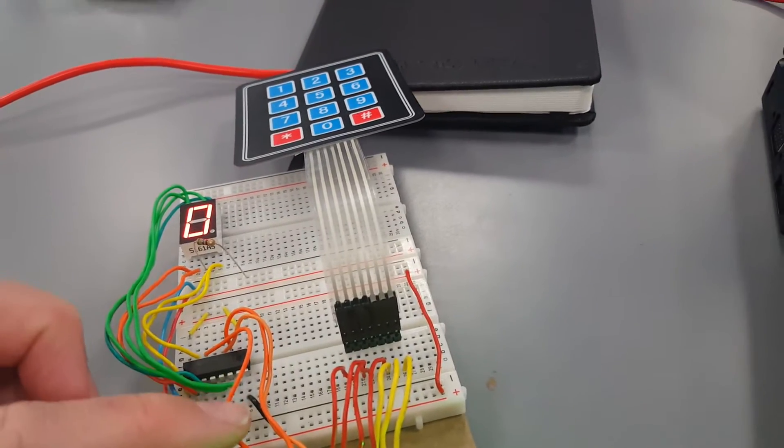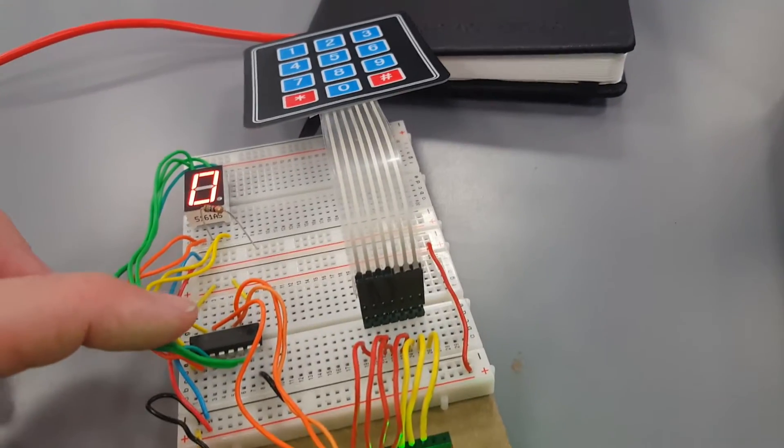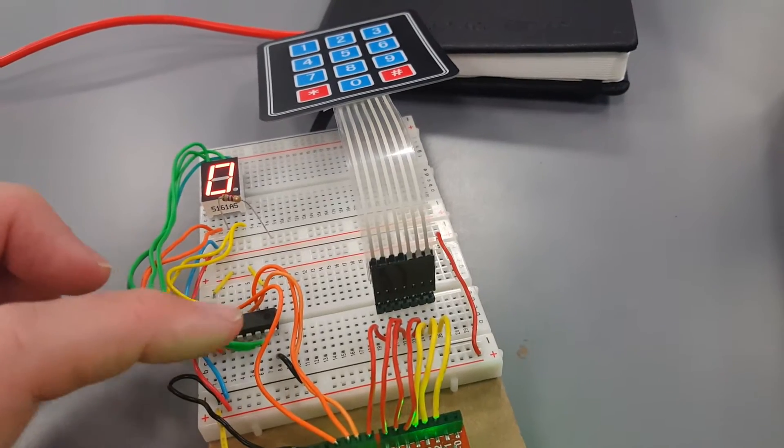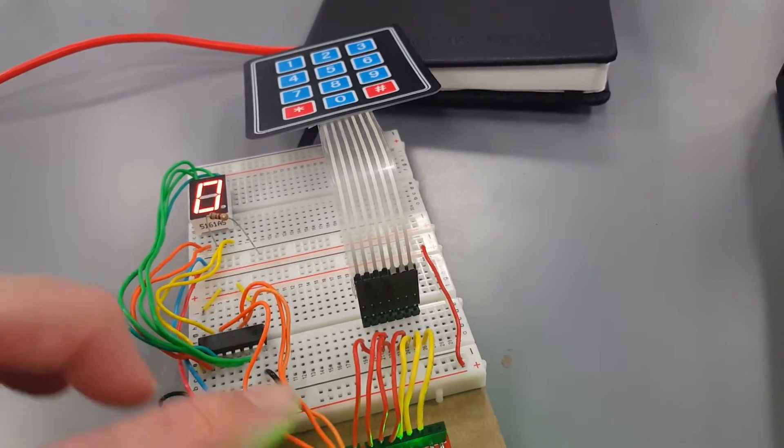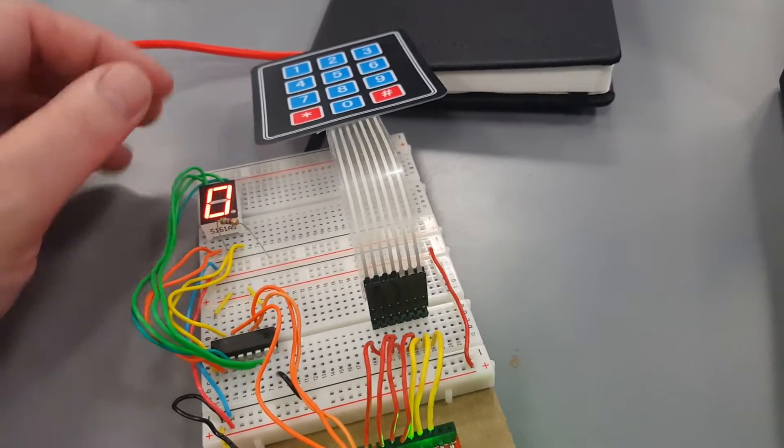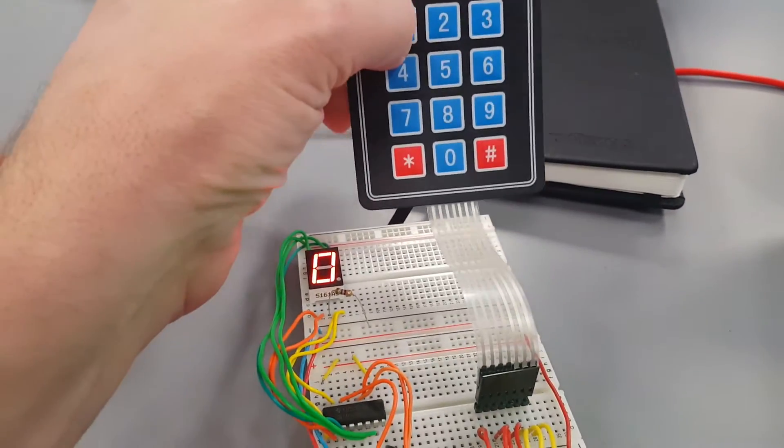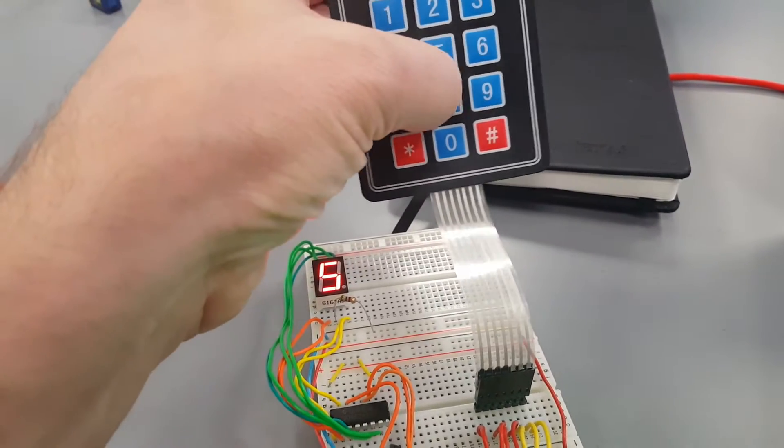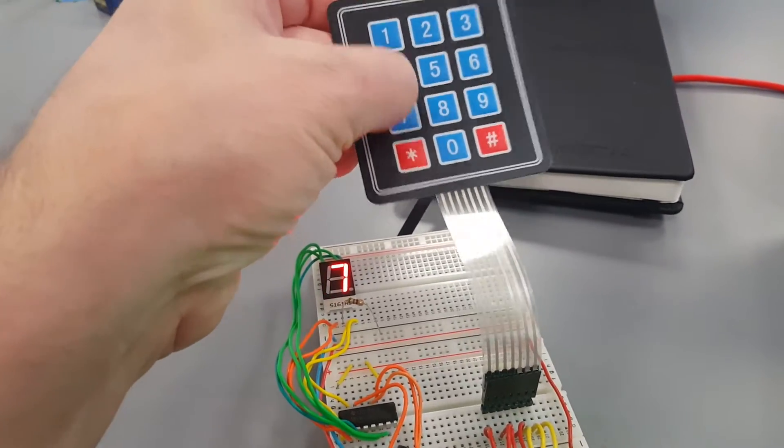I'm using a 74HC595 serial to parallel shift register to send the data that I've received off the keypad out to a seven segment display. The numbers appear across the display pretty straightforward.